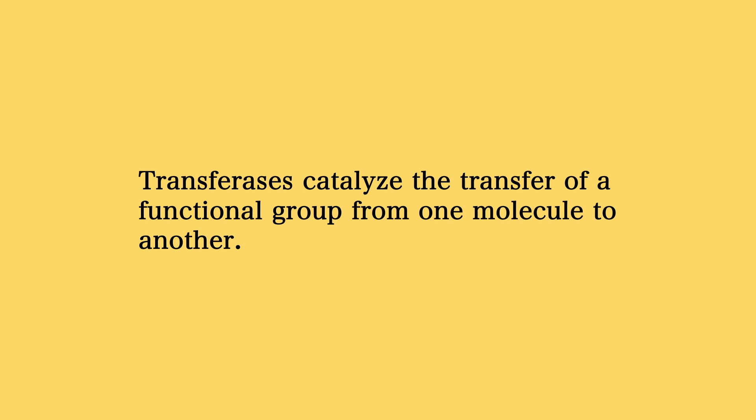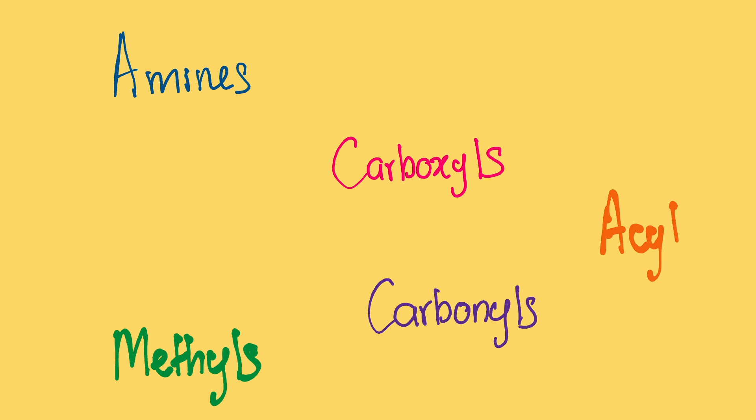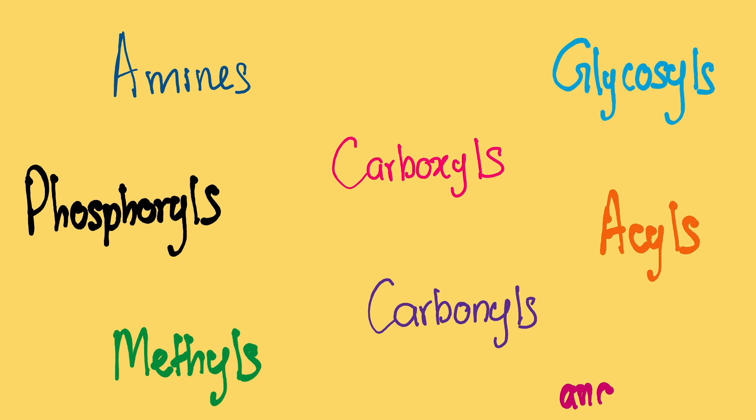Transferases catalyze the transfer of a functional group from one molecule to another. Examples of such functional groups include amines, carboxyls, carbonyls, methyls, acyls, glycosyls, and phosphoryls. These are just a few, many more. It also doesn't have to be a specific type of functional group. It could be any molecule as you'll see in one of the examples later in the video.